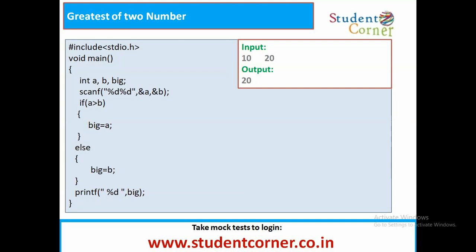This is the if-else branching statement. If the condition is true, the statements inside the if are executed. If the condition is false, the statements inside the else block will be executed. That is the meaning of if-else. So here the statement is: if A is greater than B, then the big number is A, otherwise the big number is B.